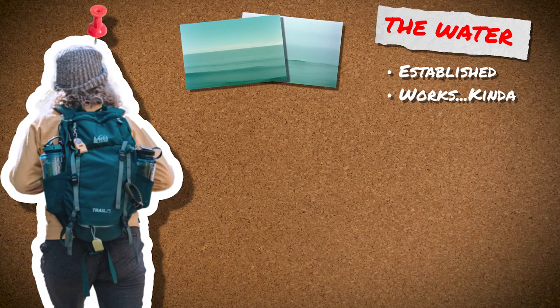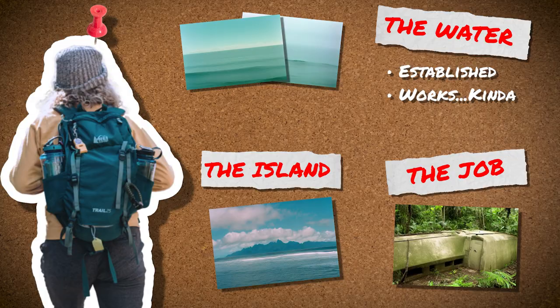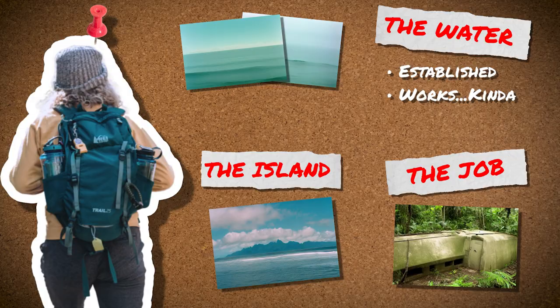So what else did I have to work with? Well, there's the island and the job. The island is a beautiful place and the job is interesting, or at least unique. The problem is they're both inanimate, passive forces. They might be appealing, but they can't actively persuade. But what can persuade are characters — people. The very thing stories are all about.